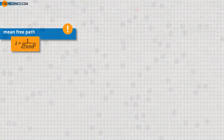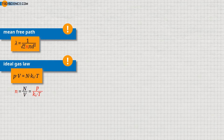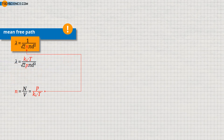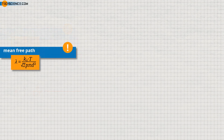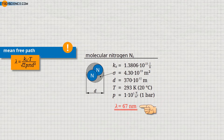For an ideal gas, the particle density can also be expressed using the thermodynamic temperature and the pressure according to the ideal gas law, where Kb denotes the Boltzmann constant. If we put this relationship into the formula for calculating the length of the mean free path, we get the shown equation. In this way, we can now calculate the mean free path as a function of temperature, pressure, and diameter of the gas molecules. For a nitrogen molecule with a diameter of about 370 picometers at a temperature of 293 Kelvin and a pressure of 1 bar, a mean free path of 67 nanometers results — about 10 times less than the wavelength of visible light.